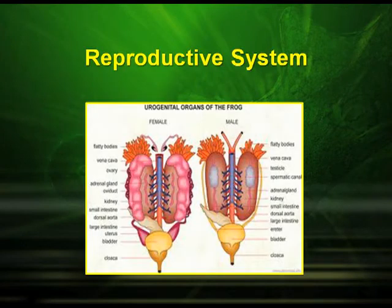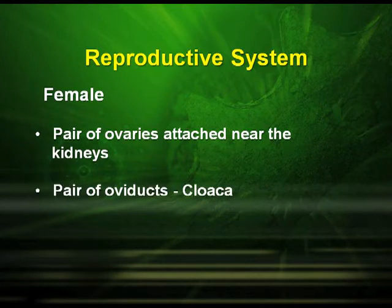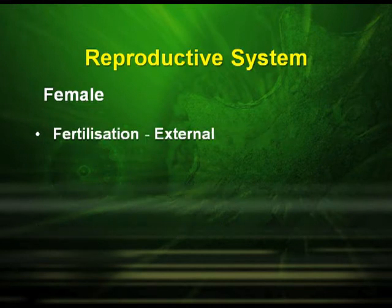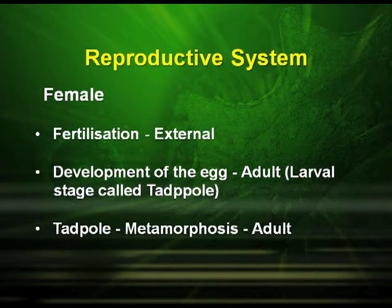Reproductive system of frog: females have a pair of ovaries attached near the kidneys and a pair of oviducts. Mature females lay about 2500 to 3000 eggs at a time. Fertilization is external, and development from egg to adult includes a larval stage called the tadpole stage. The tadpole undergoes metamorphosis and develops into an adult.